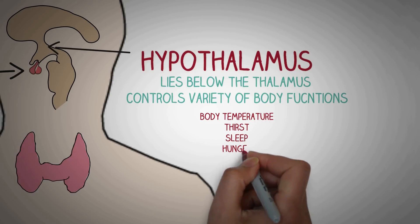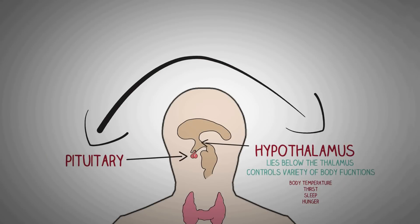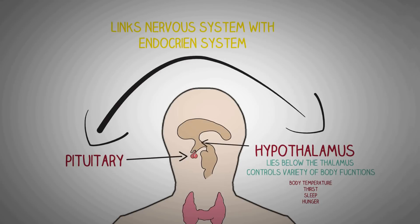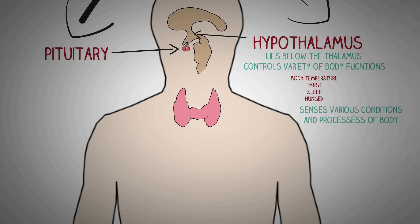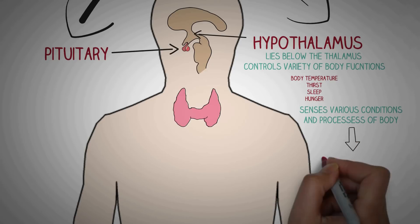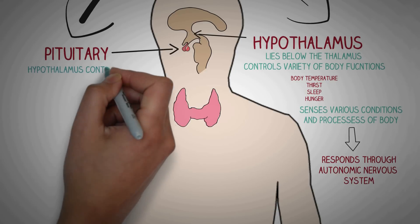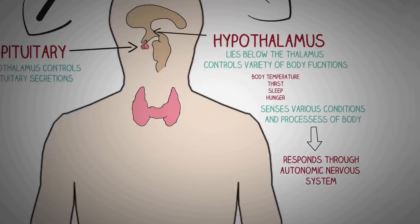One of the most important things the hypothalamus does is link the nervous system to the endocrine system through the pituitary gland. We can compare the hypothalamus to a vital part of the brain that senses various conditions and processes occurring in the body. It controls many aspects of the body through the autonomic nervous system, but also controls the body's endocrine response through the pituitary gland.